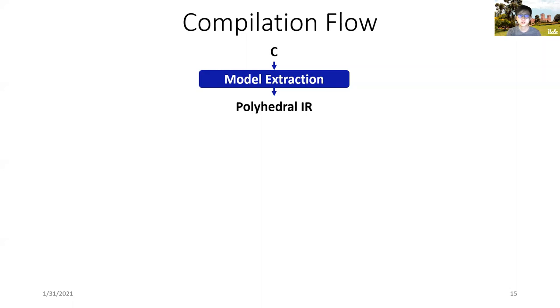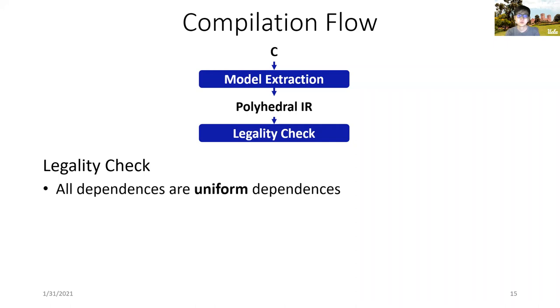The rest of the compilation flow is then operated on the polyhedral IR. The first step is checking if the input programs are legal to be mapped to the systolic arrays. Here, we list two major criteria that we examine in this step. First, all the dependencies of the program should be uniform dependencies, which means that the data dependencies' distance on the loops should be constant. This property makes sure that the systolic array can be statically scheduled without any complex runtime control logic.